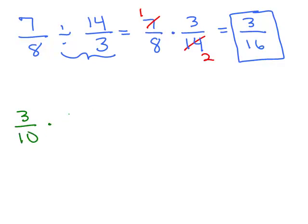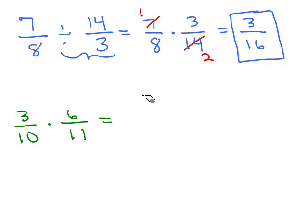Let's do another one — 3 tenths times 6 elevenths. I accidentally gave you a multiplication instead of division! If I give you a multiplication, you just multiply the numerators together: 3 times 6 is 18, and 10 times 11 is 110. But wait — I wanted to cancel first. The 6 and the 10 can cancel; there's a factor of 2, so divide each by 2. That makes it easier: 3 times 3 is 9, and 5 times 11 is 55.